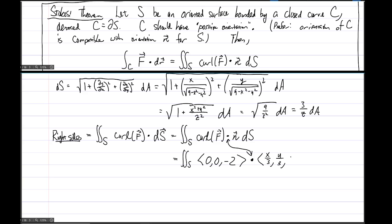And then dS, well, what about dS? dS, as we see from our computation, is going to be 3 over z dA. So this is our current way of writing dS. We do need to eventually get rid of having z's.